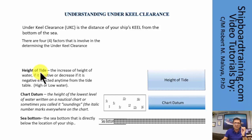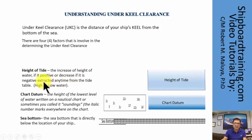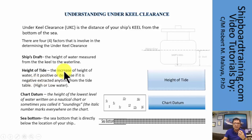The next factor is the height of tide. The height of tide can be extracted directly from the tide tables of the chart maker for the chart you are using. It is the increase in height of water if positive from the chart datum, or a decrease if it is negative from the chart datum. You can extract this anytime from the tide tables — we know it as the high and low water of the day.